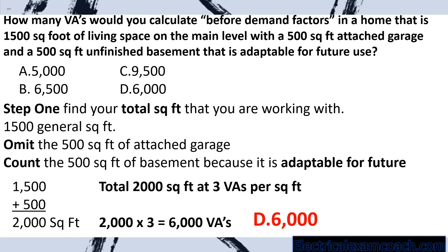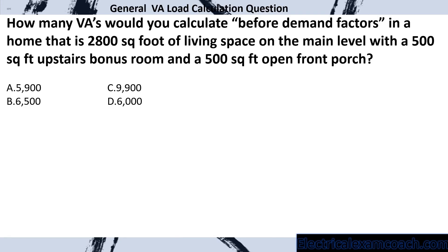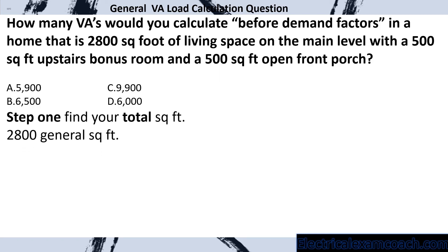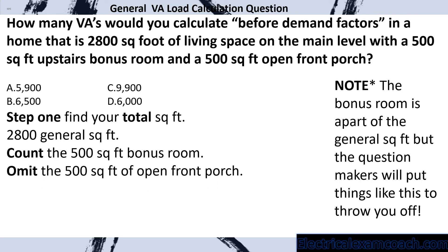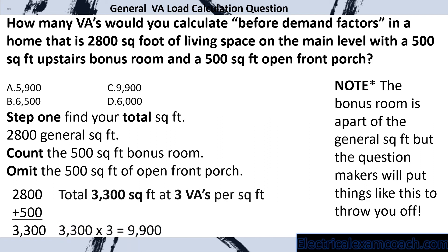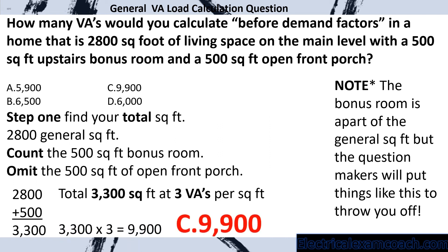How many VAs would you calculate before demand factors in a home that is 2,800 square feet of living space on the main level, with a 500 square foot upstairs bonus room and 500 square feet of open front porch? First, we total our square feet. We count the 2,800 square feet of general space. We also count the 500 square foot bonus room — note that the bonus room is part of the general square footage, but question makers put things like this in to throw you off. We omit the open front porch. That gives us 3,300 square feet multiplied by three VAs per square foot — select answer C.